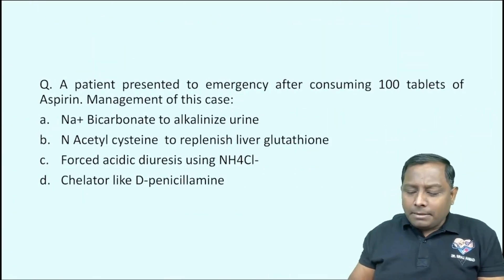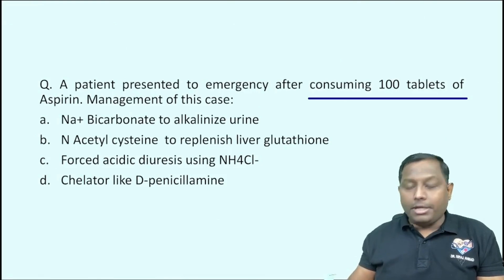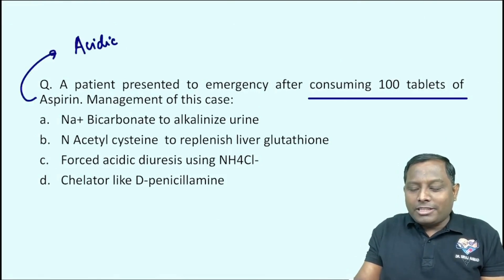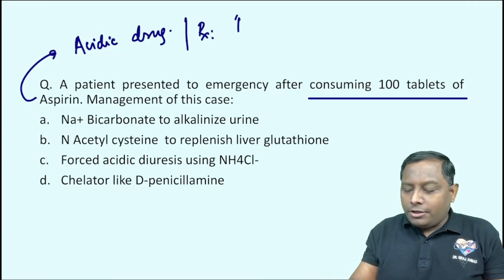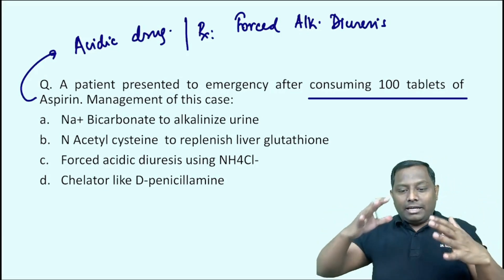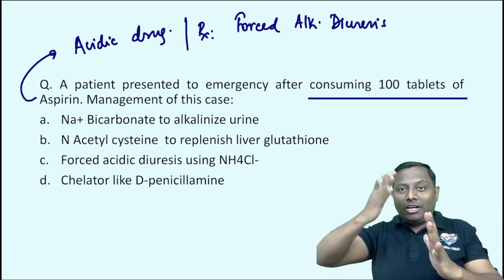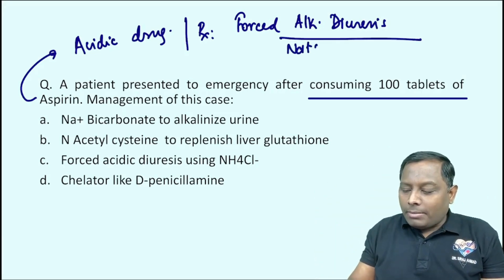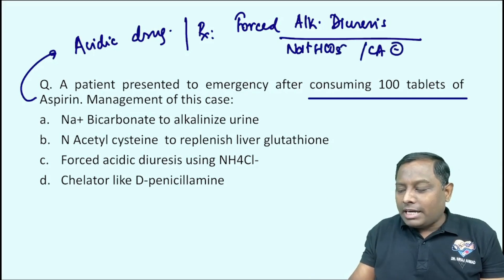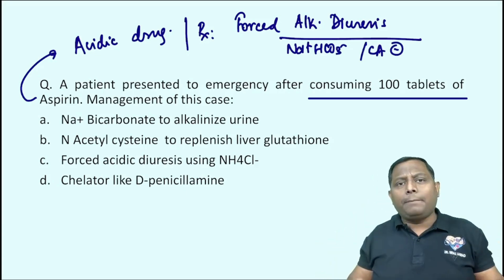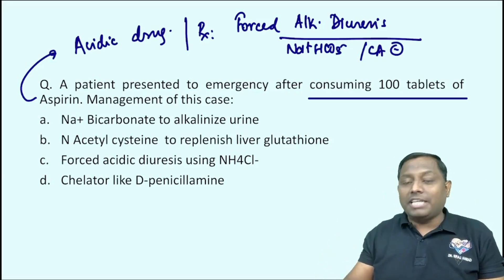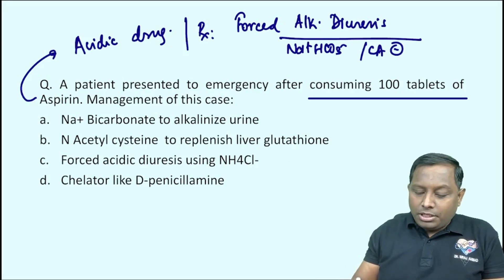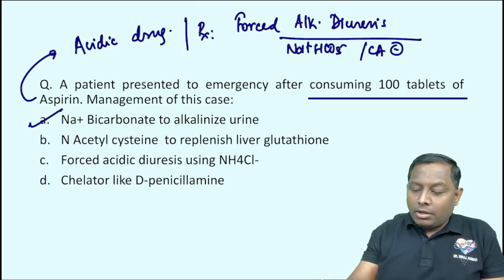A patient presented to emergency after consuming 100 tablets of aspirin. Aspirin is an acidic drug — whenever we review this we study it as a very first topic. For management we need to do forced alkaline diuresis: make the urine more alkaline so the acidic drug cannot be reabsorbed and the only way out is excretion. We use sodium bicarbonate; if that is not available, the next option is a carbonic anhydrase inhibitor like acetazolamide.